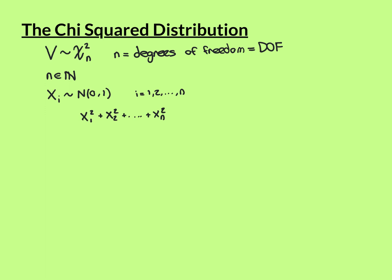These x_i are random variables drawn from standard normal distributions, taking values from negative infinity to infinity. You square each draw — which always gives a positive number — and add them all together, so you always get a positive answer. The question is: what is the probability distribution of this sum? This is exactly where the chi-squared distribution comes from. This random variable — the sum of squares of standard normal random variables — is chi-squared distributed with n degrees of freedom.